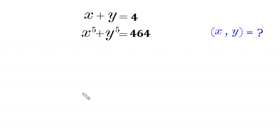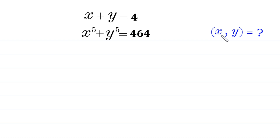Hello, welcome to how to solve this very nice system of equations. x plus y is equal to 4, and x to the power 5 plus y to the power 5 is equal to 464. We need to find all possible pairs of solutions of x and y. So, let us start.